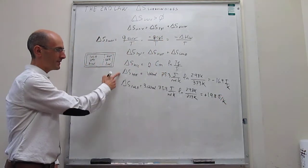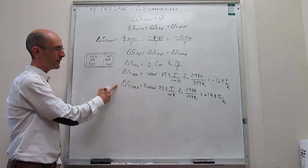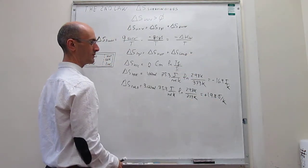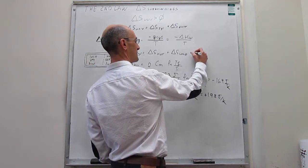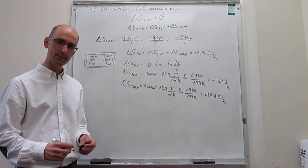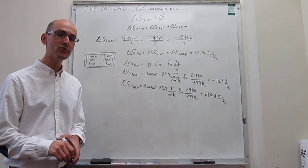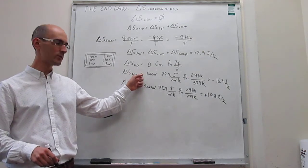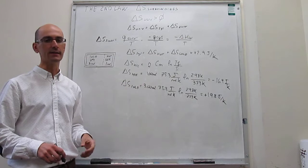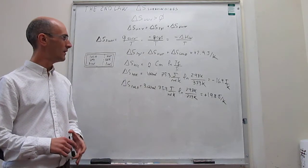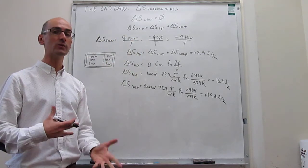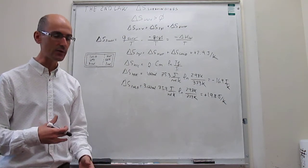Now we have the entropy change for both the hot water and the cold water, so we can find the total change in entropy of the system. Adding the two values gives ΔS_system = +2.9 J/K, which is positive. Although the hot water lost entropy, the cold water gained so much that the net change for the entire system is still an increase. However, to make a prediction of spontaneity, we also need the change in entropy in the surroundings.